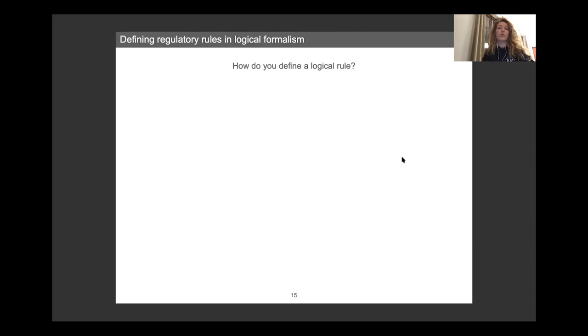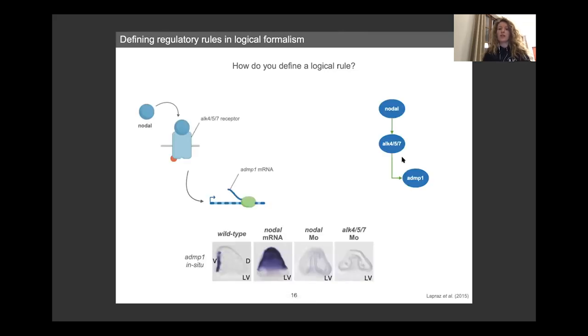And to build rules, we base ourselves on the in-situ experiments also. So here is another example. You can see here that ADMP1 is another gene that is downstream of the nodal ALK receptor pathway, and that you can see that it's ventrally expressed, overexpressed when the nodal is overexpressed, and has its expression disappear when we perturb either nodal or its receptor.